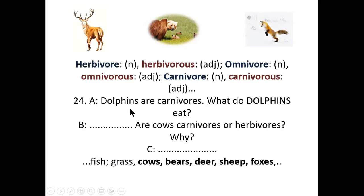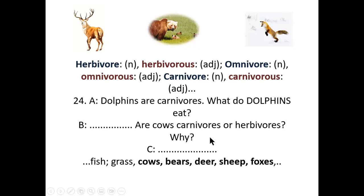Dialogue 24a: Dolphins are carnivores — just like 'those people are doctors' or 'those trees are apple trees.' Dolphins are carnivorous. What do dolphins eat? Dolphins eat fish and meat. Are cows carnivores or herbivores? Cows are herbivores because they eat grass.